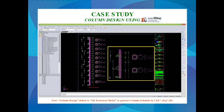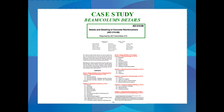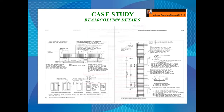The longitudinal section of the column can also be generated, showing all the cutting lengths for the longitudinal bars as well as the column ties. Take note that all beam and column details follow the ACI 315 provision, which is the reference used by Midas for all drawing shop details.